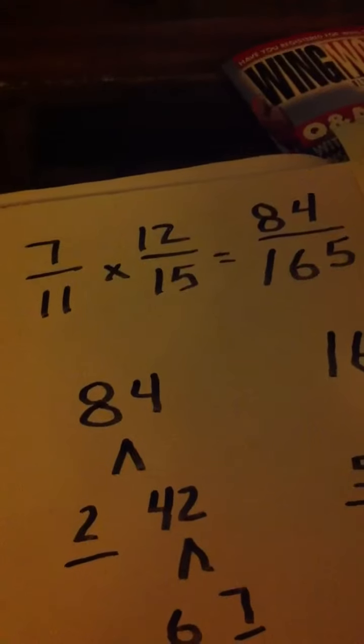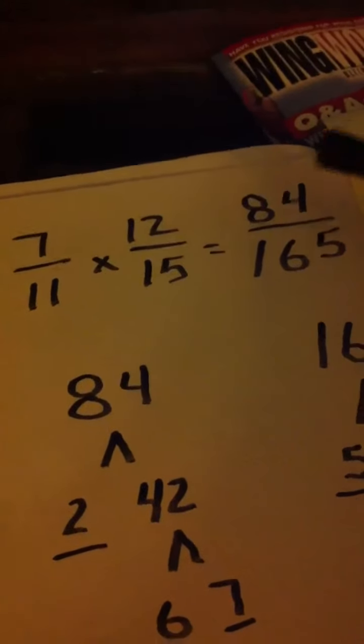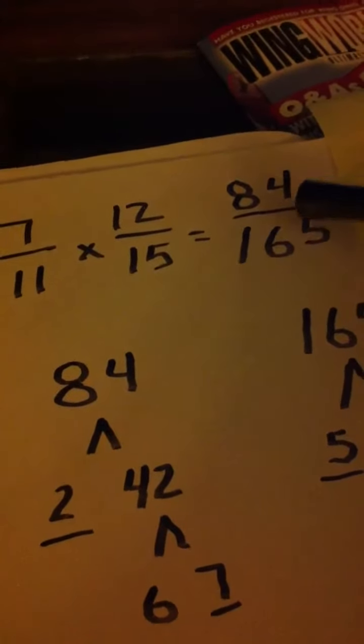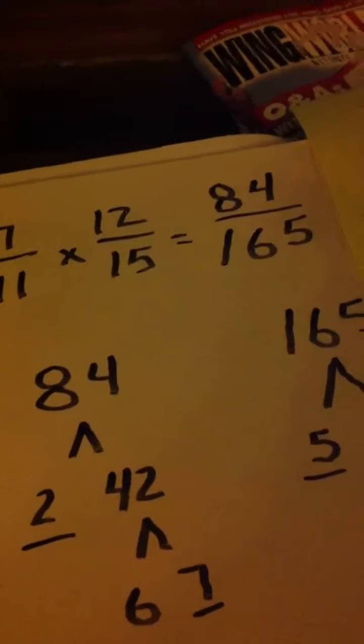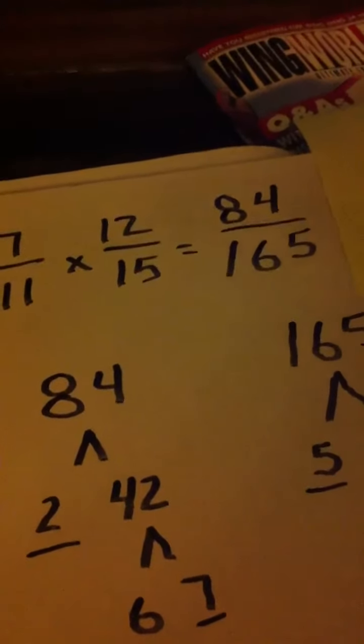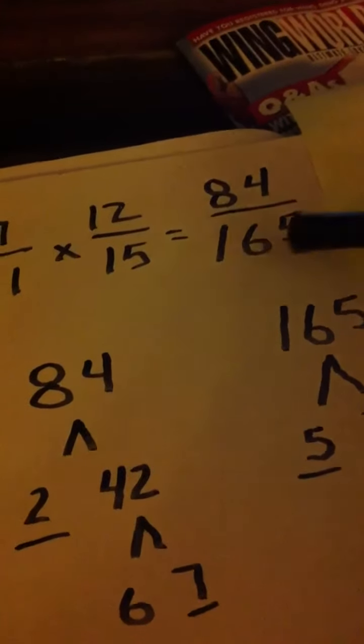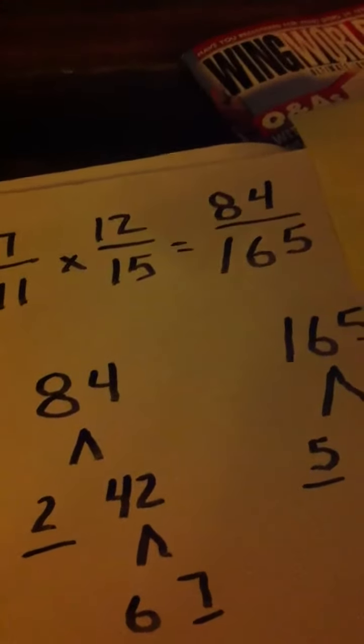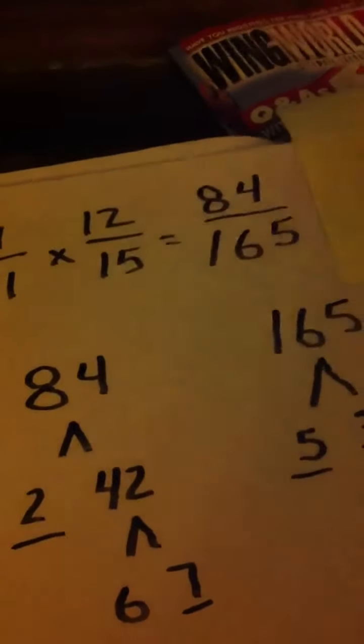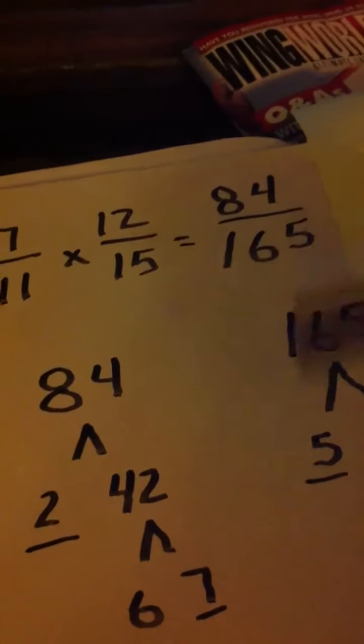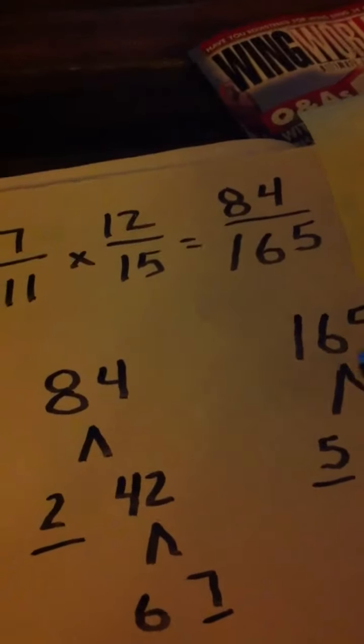Look what happens whenever you do that. You end up with 84 over 165 and if you just look at that, you've got 84 which is an even number and 165 which is an odd number. So if you're quickly running through your homework, you would think that you're finished and that that was the answer.